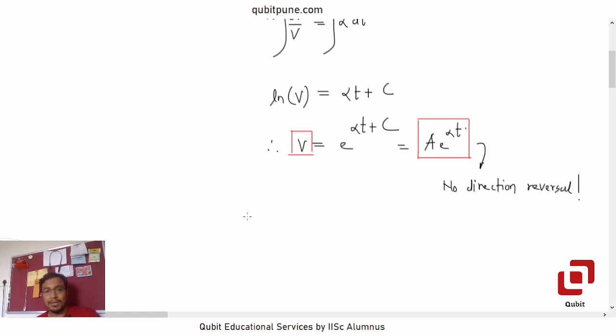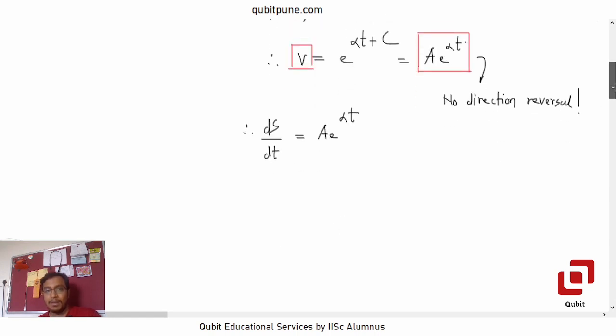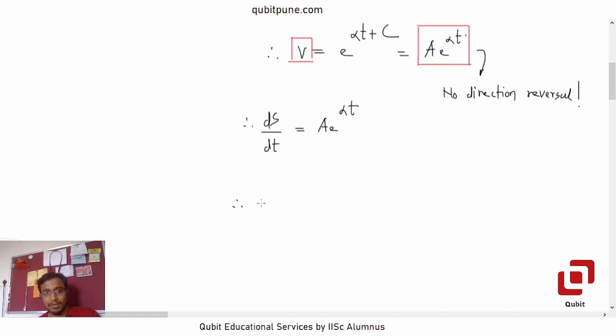Therefore, now what is v? Is it not ds by dt? Yes, it is. ds by dt is a e to the power alpha t. Again, this is a variable separable differential equation.